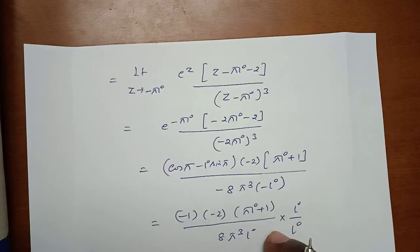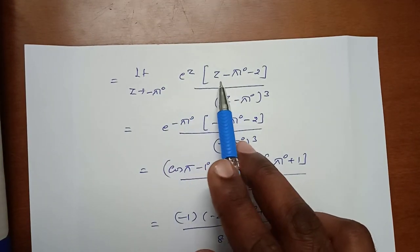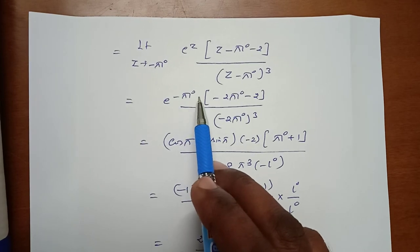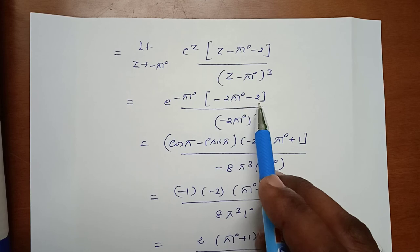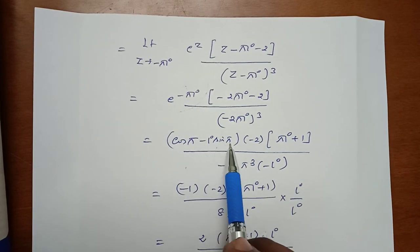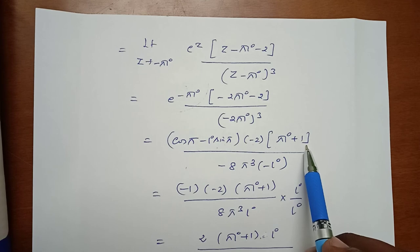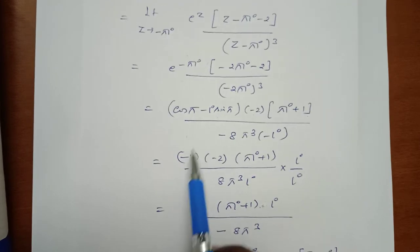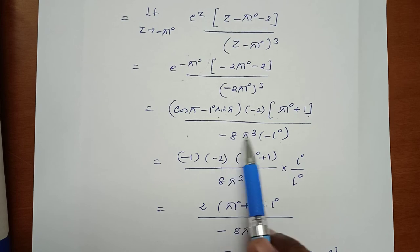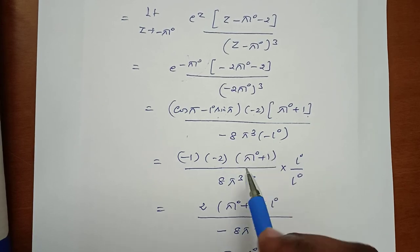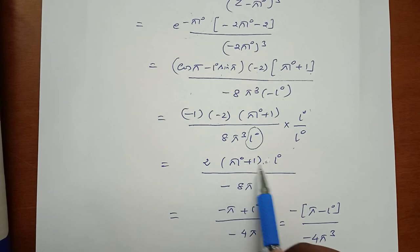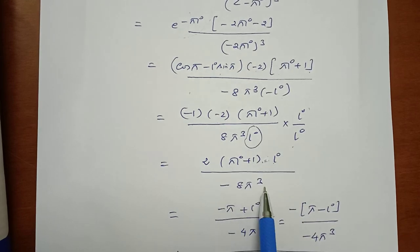Factoring out e^z: lim(z→−πi) e^z · [(z − πi) − 2] / (z − πi)³. Substituting z = −πi: e^(−πi) · (−2πi − 2) / (−2πi)³. Using e^(−πi) = cos π − i sin π = −1, and (−2πi)³ = 8π³i: the expression becomes −2(πi + 1) / (−8π³i) = 2(πi + 1) / (8π³i). Rationalizing by multiplying by i/i gives (−π + i) / (−4π³), i.e., (π − i) / (4π³).